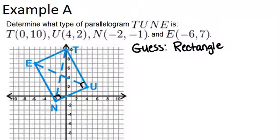So now we actually have to show that it is a rectangle. One of the quickest ways to show that a quadrilateral is a rectangle is to show that its diagonals are the same length, because if they're the same length, then it has to be a rectangle. So what we're going to do is check the lengths of EU and TN and show that they're the same length. And if they're not, that means that we must have been wrong in our guess.